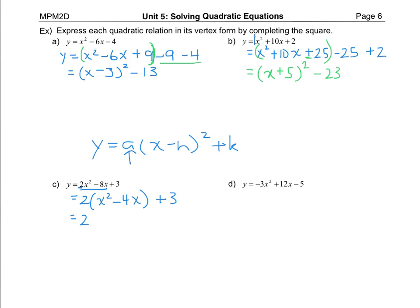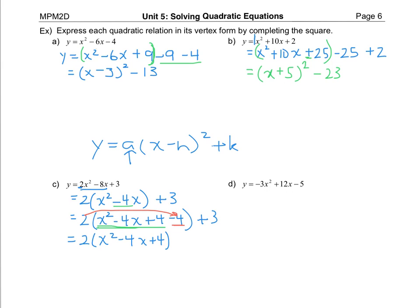Step two is to take half of the coefficient of the x term. Half of negative four is two, and then two squared is four. So I'm going to add a four and subtract a four — the net result is zero. Step three is to multiply to get rid of that minus four inside the bracket. We know these first three terms form the perfect square, so I need to move this minus four out of the bracket by multiplying it by two. My two stays, I still have x squared minus four x plus four as my perfect square, then I multiply two with negative four to get minus eight, and we still have plus three on the end.